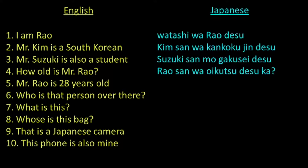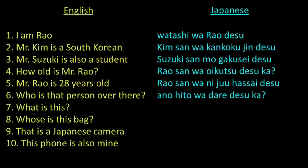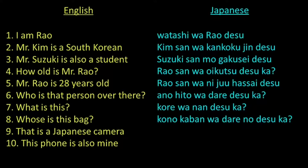Let us go to sentence number five. Here, 28 years old is mentioned, which is Nijuhassai. So the translation will be: Rao san wa Nijuhassai desu. Next is sentence number six. Person is Hito and that over there is Ano. You have learned that who is dare. So the translation will be: Ano Hito wa dare desu ka? Next is number seven. What is nan and this is Kore, so the translation will be: Kore wa nan desu ka? Next is sentence number eight. Whose is dare no and this bag is Kono kaban, so the translation will be: Kono kaban wa dare no desu ka?